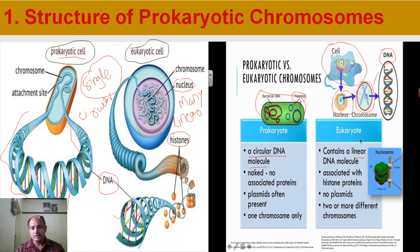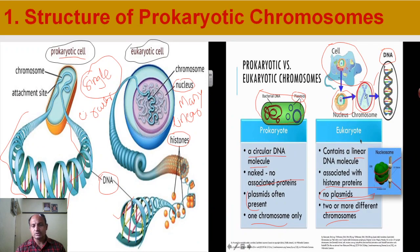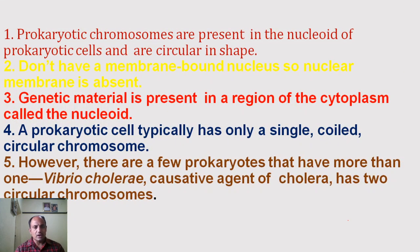In the prokaryotic cell, a single circular DNA molecule is present, and it is naked — not associated with any proteins. But in the eukaryotic cell, the DNA is associated with proteins. In addition to the circular DNA, prokaryotic cells also have plasmids, which are also circular DNA molecules, but these are absent in eukaryotic cells. Prokaryotic cells have only one chromosome, while eukaryotic cells have two or more different types of chromosomes.